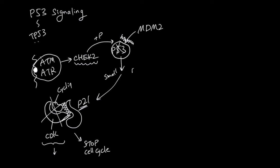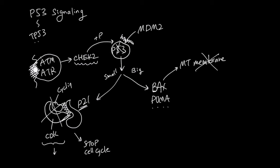Now if the damage is big and hard to repair, then P53 is going to activate other proteins. One of them is called Bax and the other one is called PUMA — PUMA stands for P53 Upregulated Modulator of Apoptosis. Bax will go to the mitochondrial membrane and dissolve the membrane. Because of this, the things in the mitochondria leak out, and one of those things is cytochrome C.